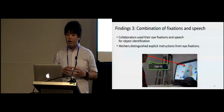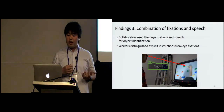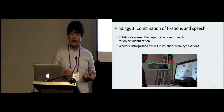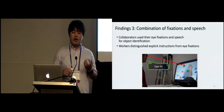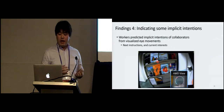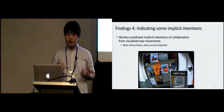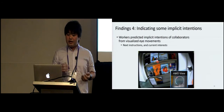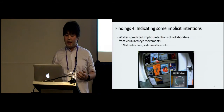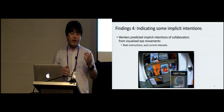The third finding is that we observed a combination of eye fixations and speech when the collaborator gave explicit instructions via eye fixations. Workers could easily distinguish instruction via eye fixations from other natural eye movements. The final finding relates to the previous one: the worker can predict implicit intentions from natural eye movement of the collaborator. When the collaborator did not say anything, in the fixed device setting, the worker said they could estimate the next instruction. In the wearable device setting, they roughly knew where the collaborator was looking.